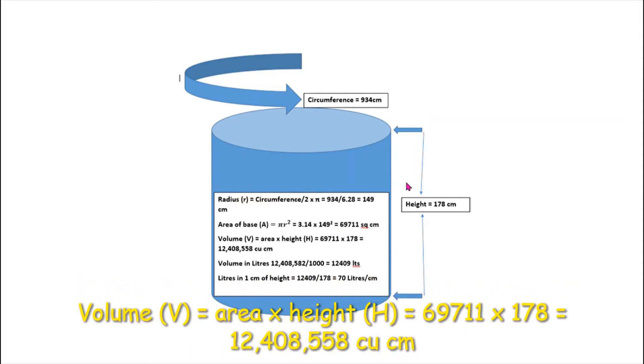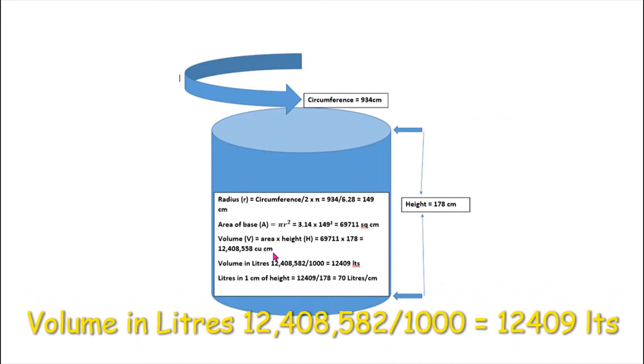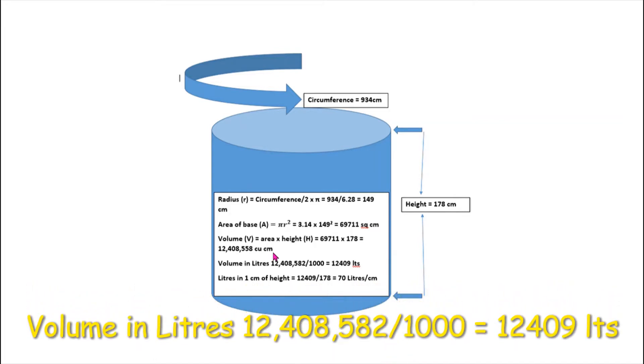Then to get the volume, we have to multiply the area by the height. Doing that, we come out with 12,408,558 cubic centimeters. Now to convert those to liters, there's 1,000 cubic centimeters in a liter, so we divide by 1,000. The full volume of the tank is 12,409 liters above the tap.